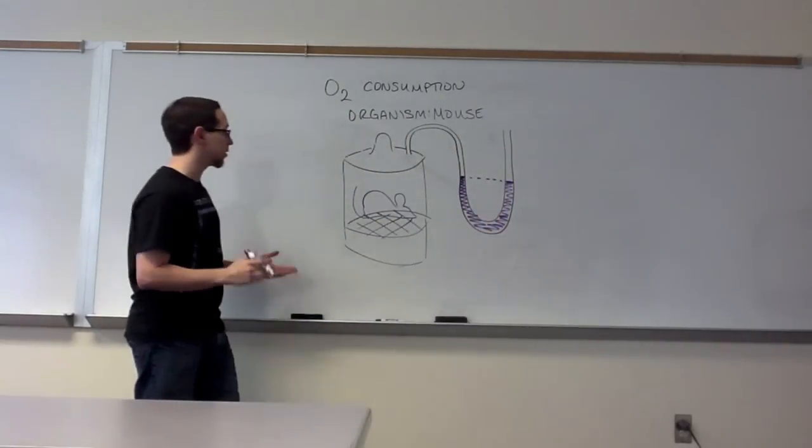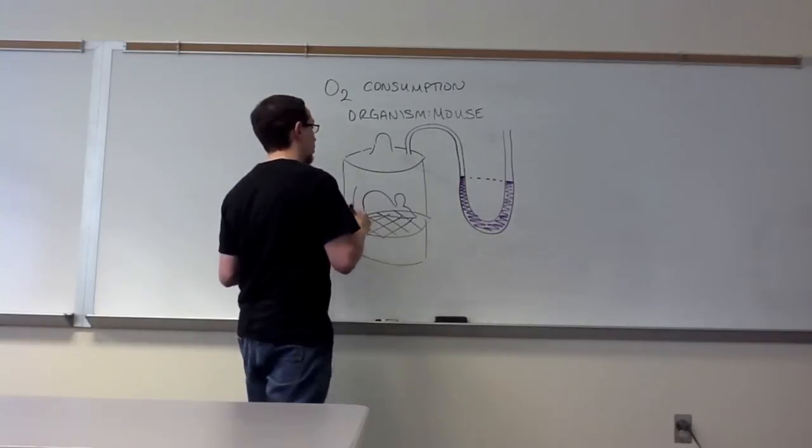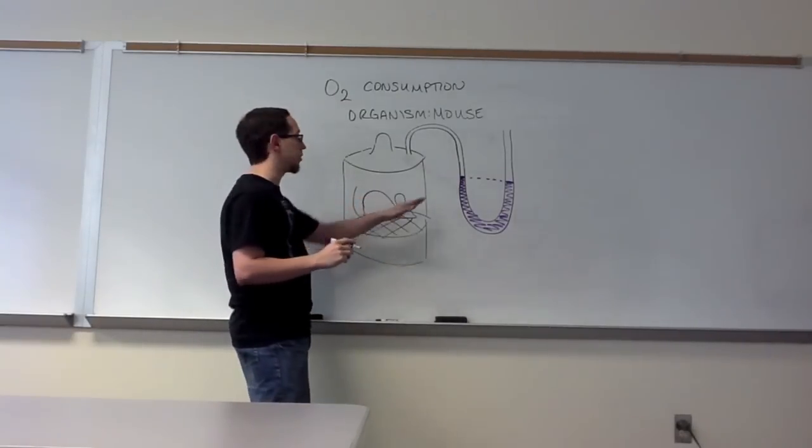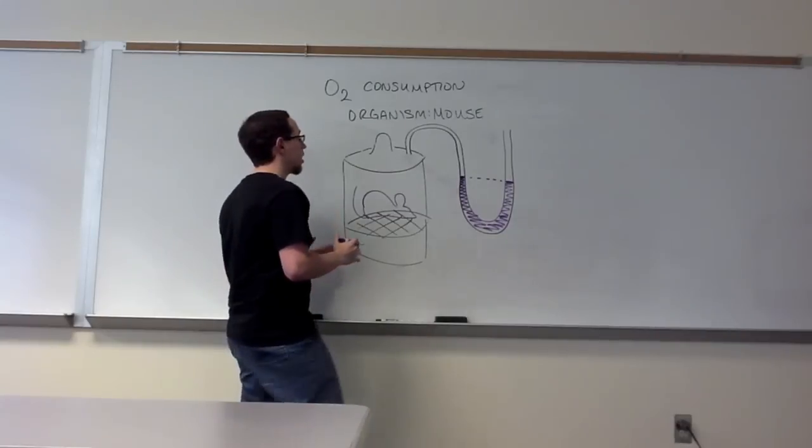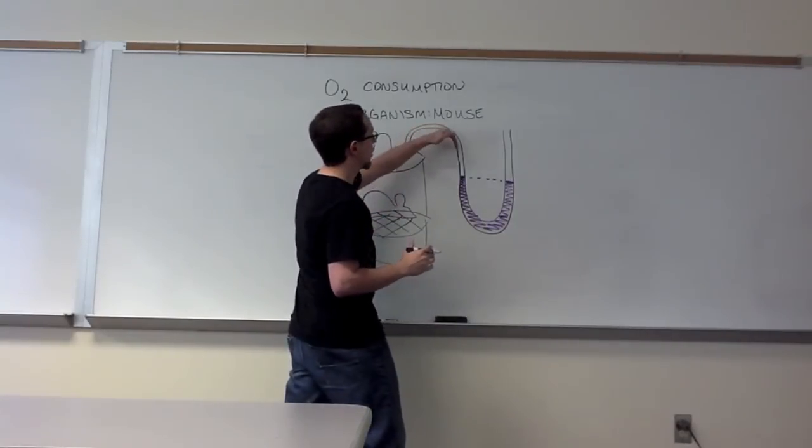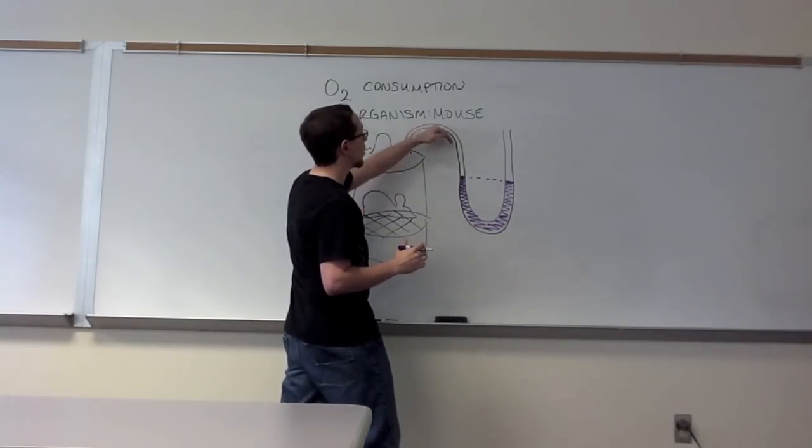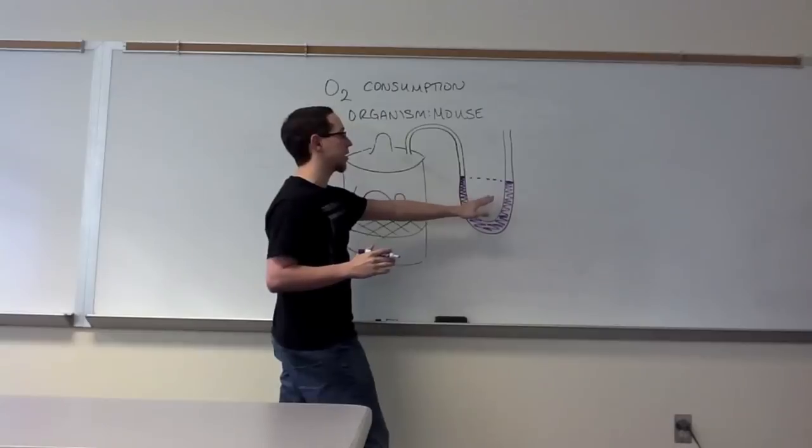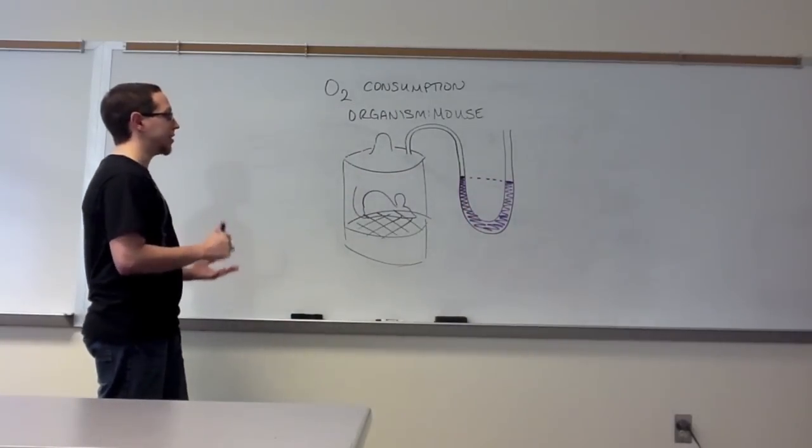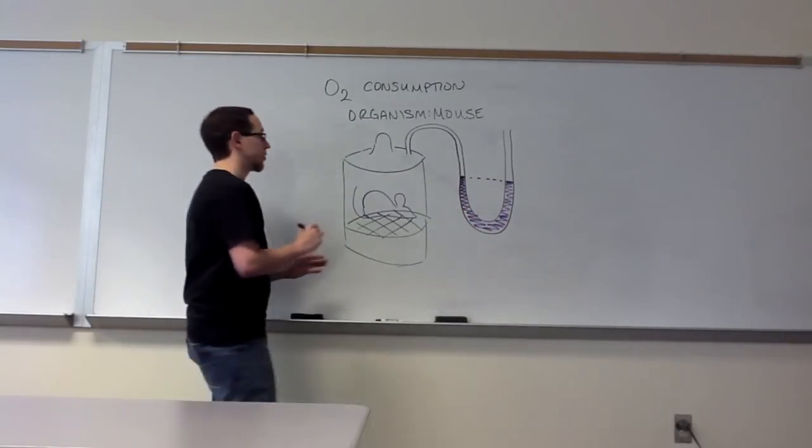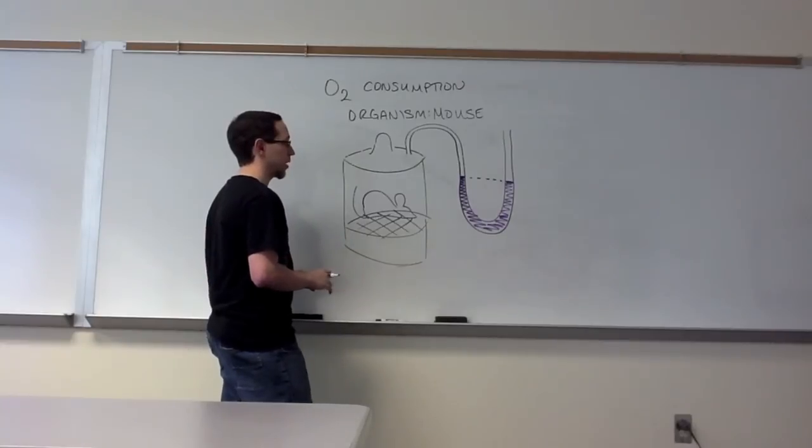But there's a problem with this, and that problem is the fact that currently the mouse inhales oxygen, creating the vacuum, and then exhales carbon dioxide. As it exhales the carbon dioxide, that carbon dioxide is going to increase the pressure, causing the water level to go back to where it was initially. So what we need to do is we need to remove CO2 from this equation.